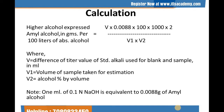The formula for the calculation is: higher alcohol expressed as amyl alcohol in grams per 100 litres of absolute alcohol equals V × 0.0088 × 100 × 1000 × 2, divided by V1 × V2. Here, V is the difference of titration values of standard alkali used for the blank and sample in ml, V1 is the volume of sample taken for estimation, V2 is the alcohol percent by volume, and 1 ml of 0.1 N NaOH is equivalent to 0.0088 gram of amyl alcohol.